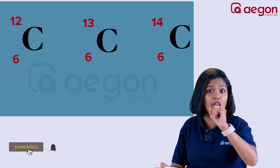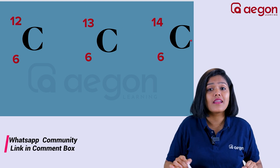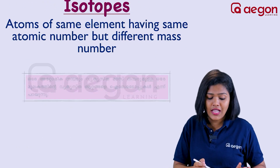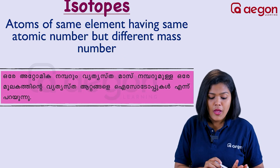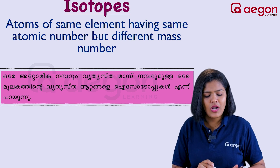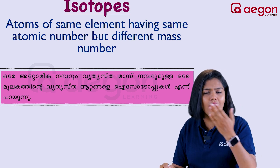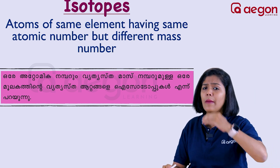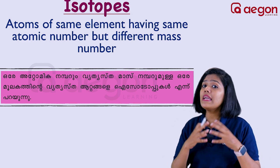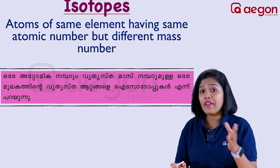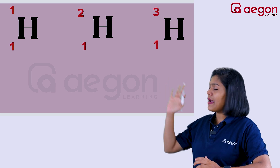We have seen the definition of isotopes. The names are carbon-12, carbon-13, and carbon-14. Isotopes of the same element have the same atomic number but different mass numbers. Their mass numbers are different, and atoms of all isotopes have different properties. This is what isotopes means.